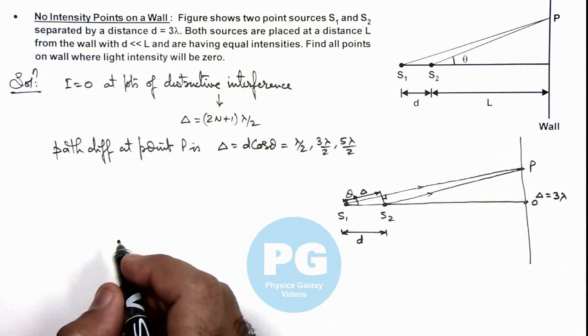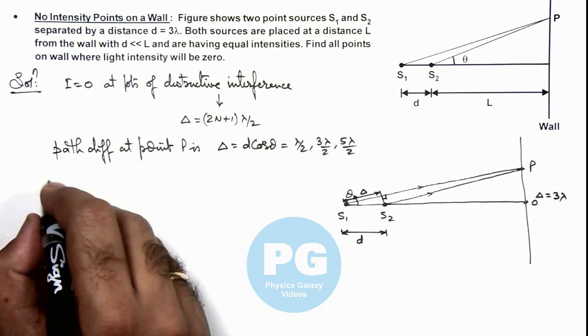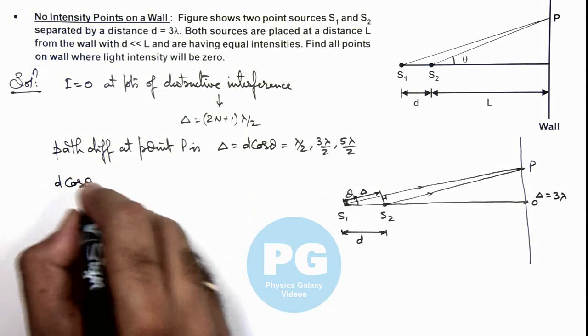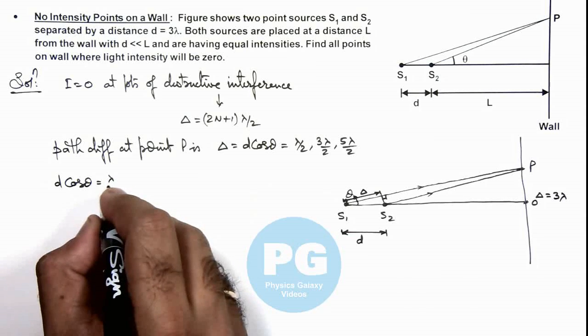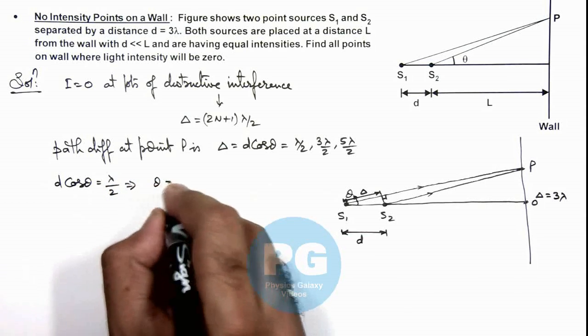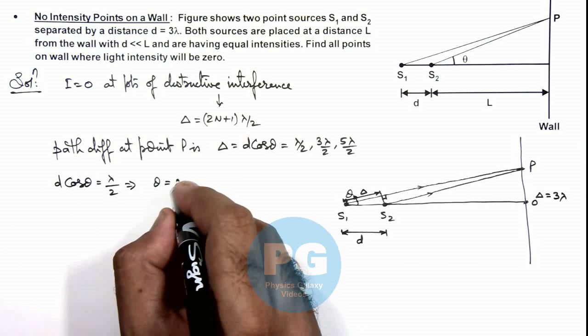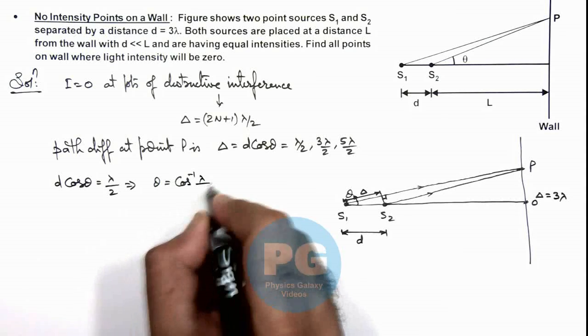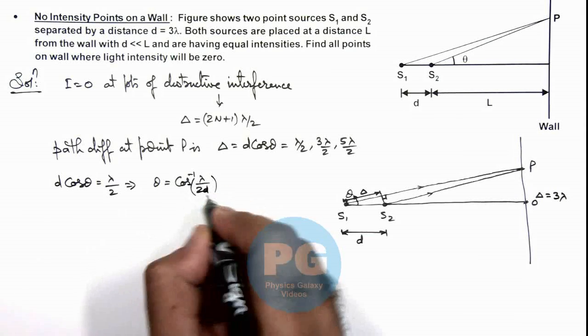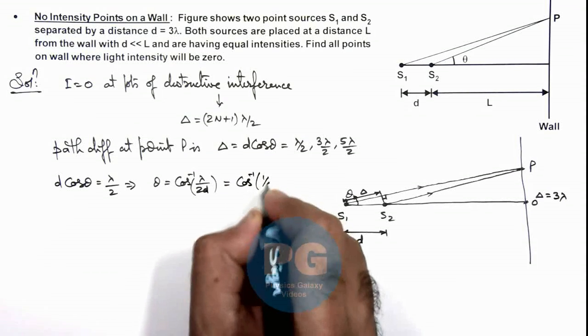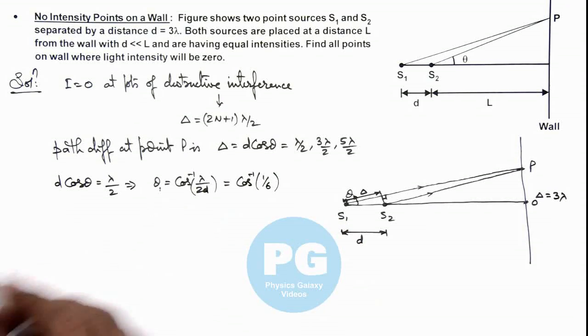In this situation we can write the first point is d cos θ equals λ/2. This implies the value of theta we are getting is cos inverse of λ/(2d), and if we substitute d as 3λ, this is cos inverse of 1/6. This is θ₁.